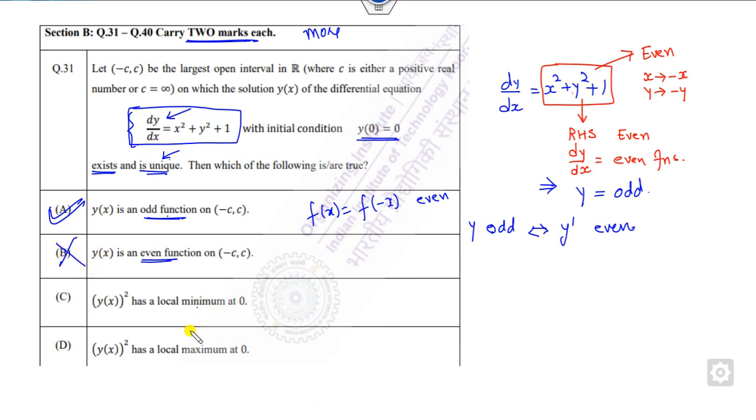Now you have to think about the local maxima minima, but you have to think about y squared. What I have proved is that y is an odd function. Since the function is not given to you, you have to take any function which satisfies this property. I can consider y equals x cubed. Clearly, this is an odd function. What is the graph of this function? This is an odd function.